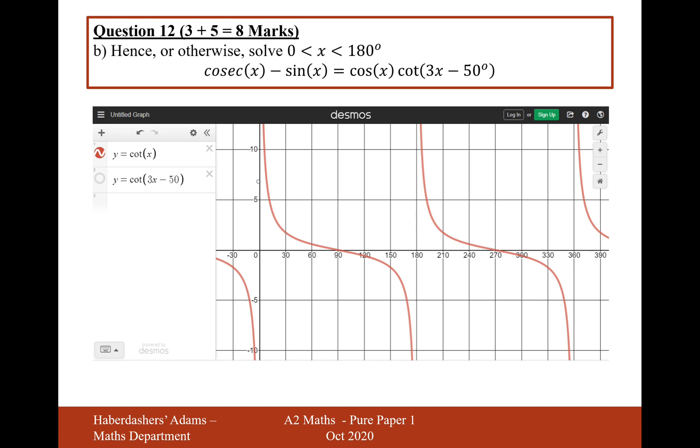What I've got here is the cot graph measured in degrees between 0 to 360. We only need it between 0 to 180, but I've drawn the whole cot graph there. And then if I put on the extra graph of 3x minus 50, cot 3x minus 50, then it will look like this thing here. And I clearly get 2 solutions, 1 here and 1 here, just below 120 and just below 30 degrees.